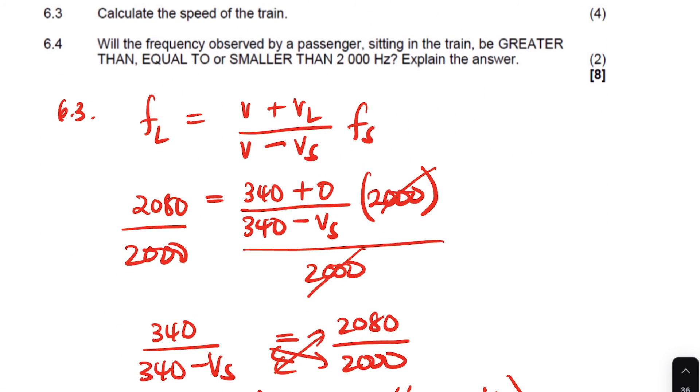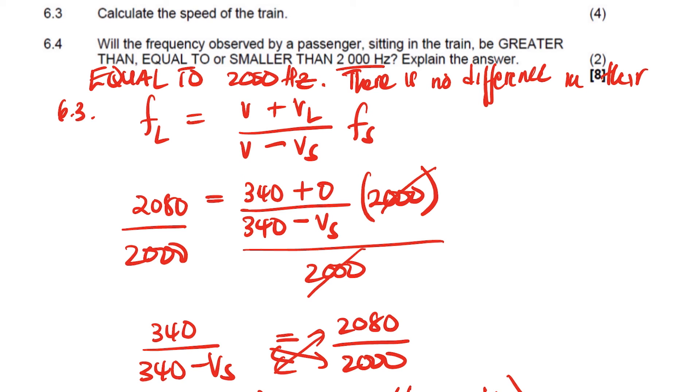Now let's answer the last question. The last question it says here, will the frequency observed by the passenger sitting in the train be greater than or equal to or smaller than 2,000 hertz? Explain your answer. So my answer here, it will be equal to 2,000 hertz. Guys, as I've mentioned in the previous video, if you're in the same, you are moving with the same velocity as the source, you are inside of the source. Because there's no change in velocity, that means your frequency will be the same. So here, your answer here, you see, there is no difference in their velocities.